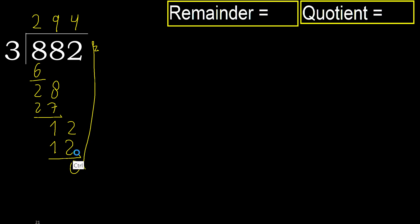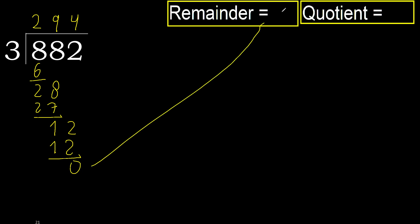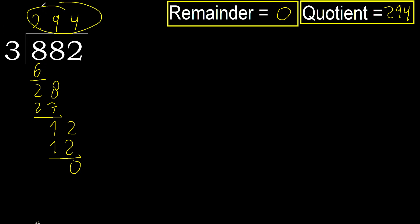There is no next number, therefore finished. So 882 divided by 3 is 294.